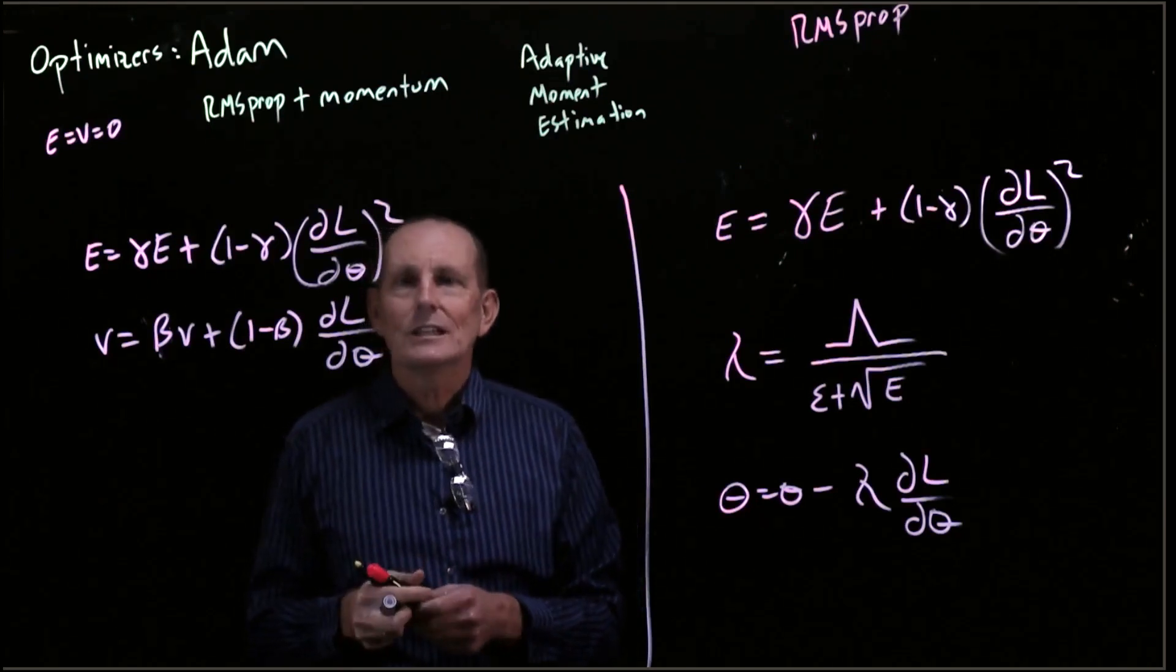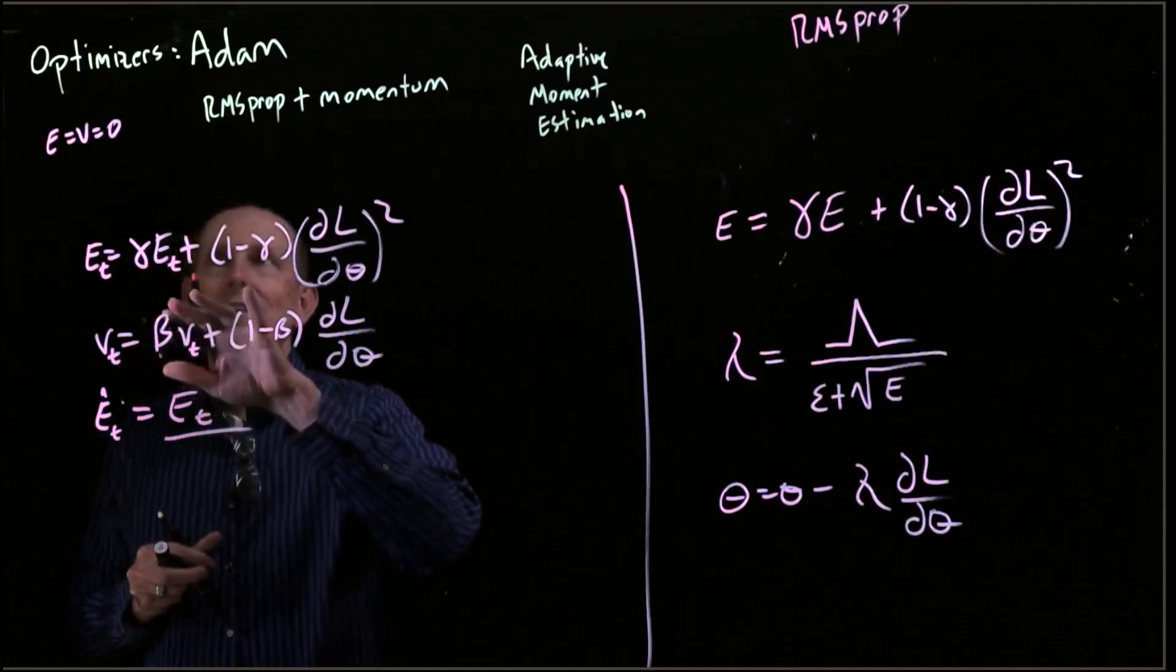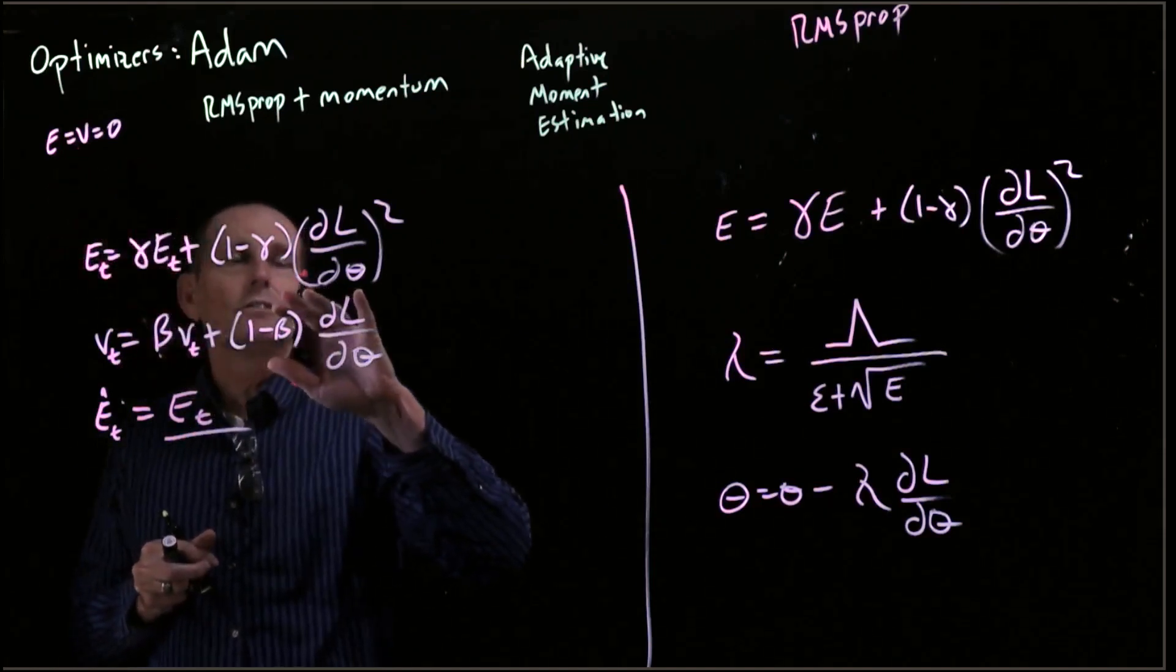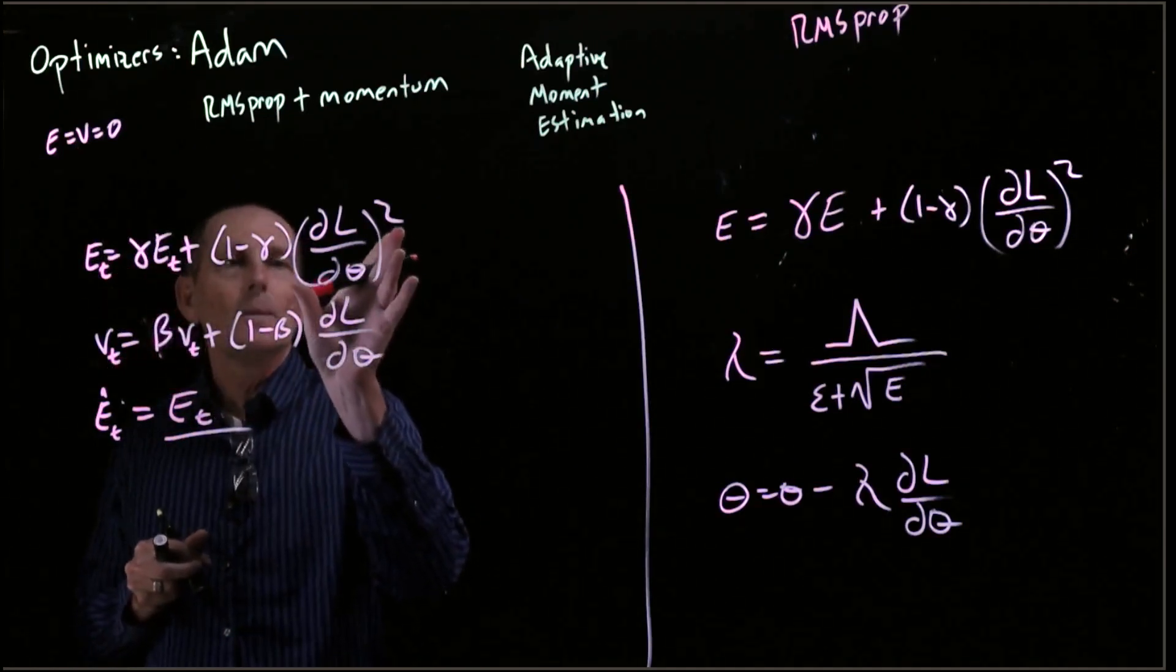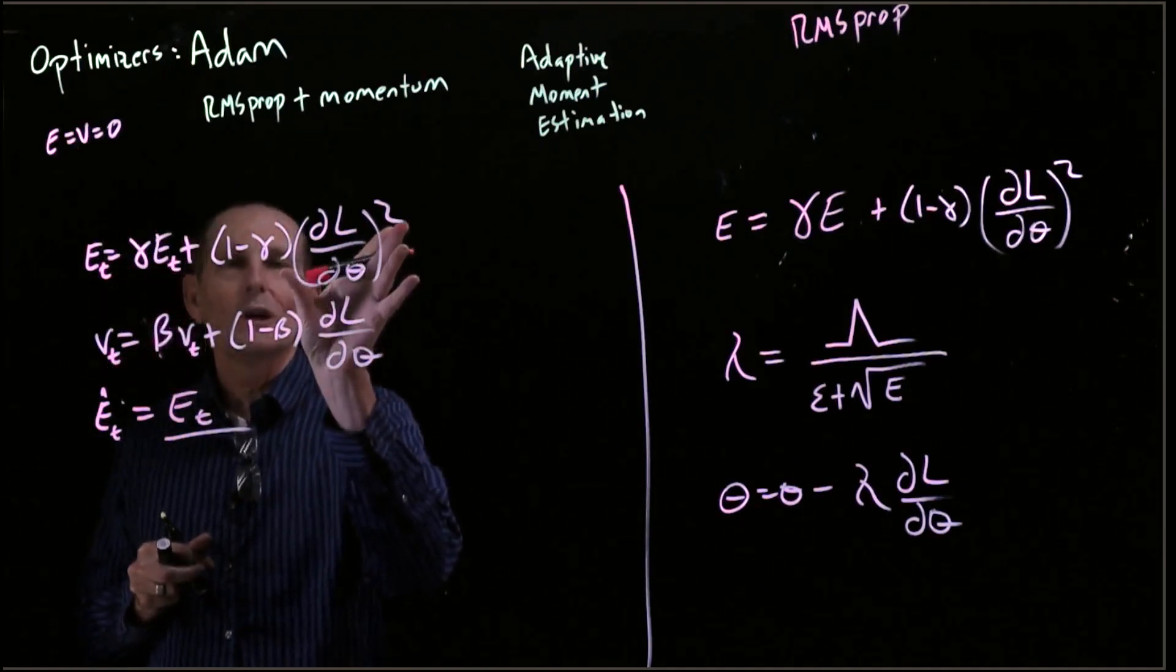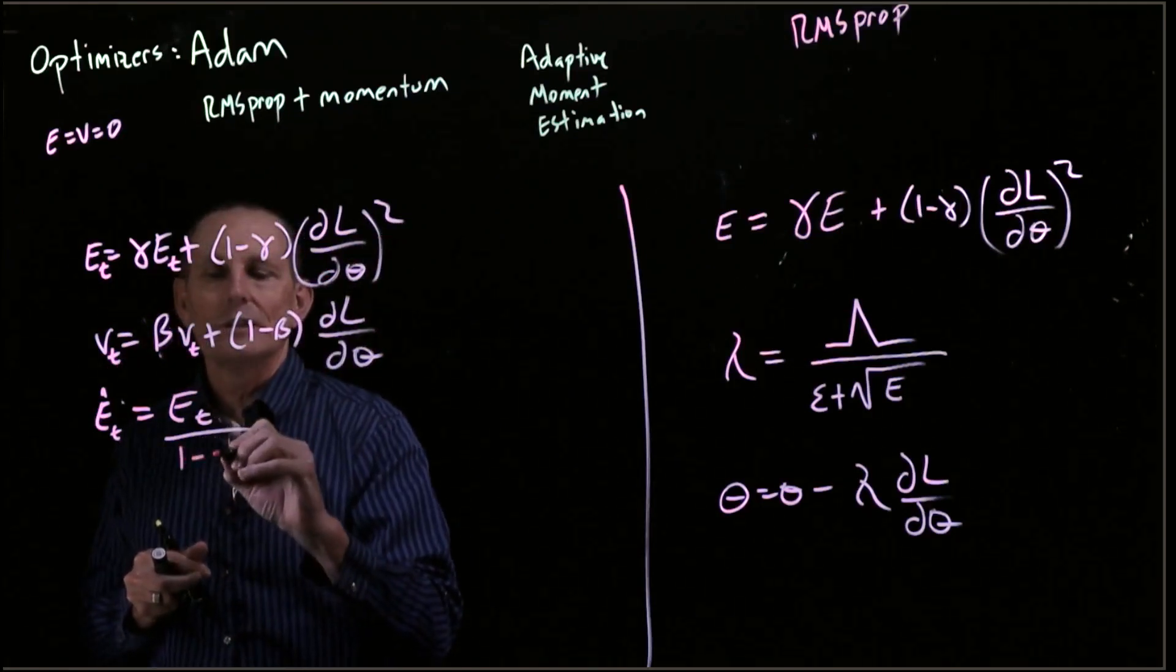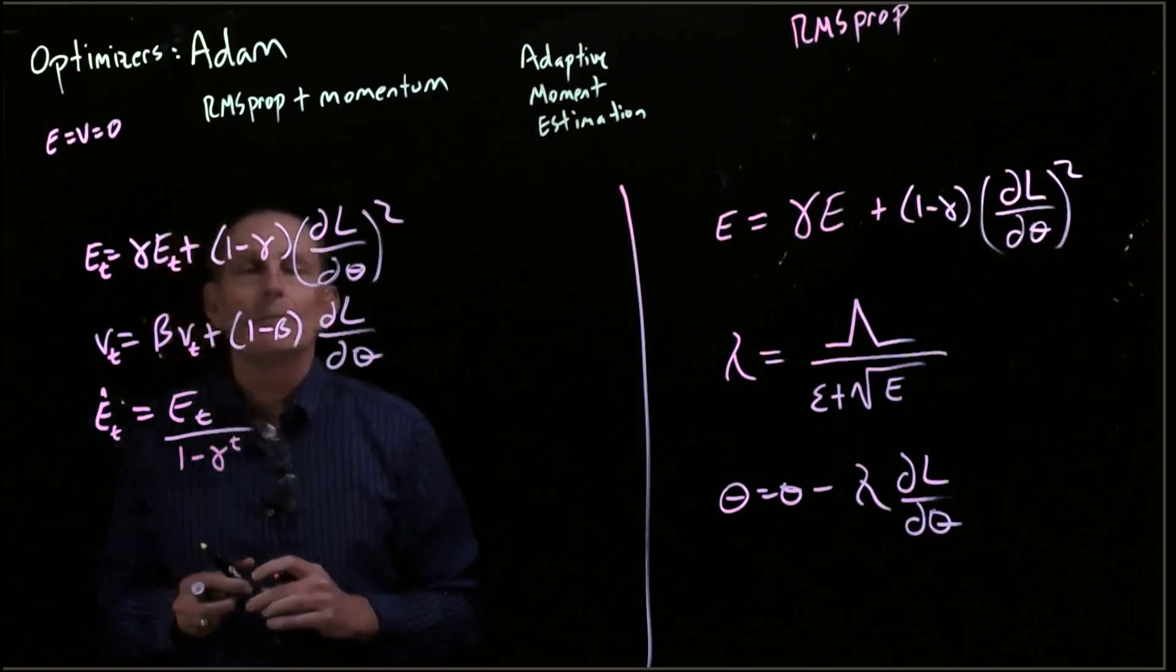But what we can do is actually correct this because of the fact that we're initializing it to zero. So if we look at the first estimation at time 1, we have our current square gradient, but we multiply by a factor of 1 minus gamma. So what we'll do here is just divide by 1 minus gamma to the T.